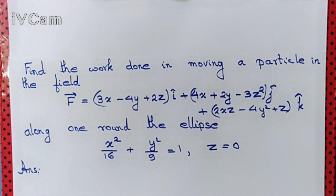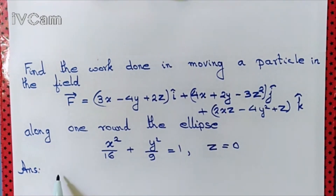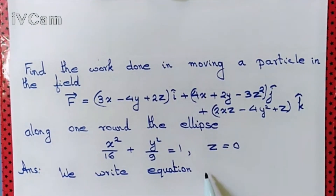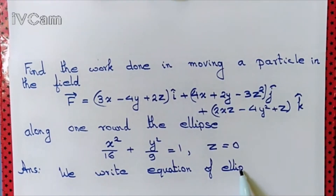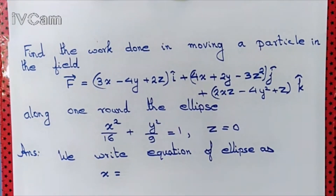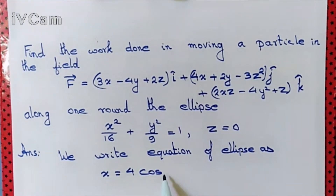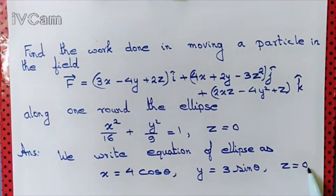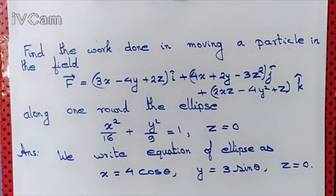It will be easier for us if we change the coordinate from Cartesian to parametric form. So we write the equation of the ellipse as x equal to 4 cos theta, y equal to 3 sin theta, and z equal to 0. That last condition conveys the information that we are on the xy plane.